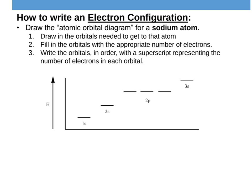As a quick review, if I draw an atomic orbital diagram for sodium — just Na — sodium has 11 electrons. Putting those in: 1, 2, 3, 4, 5, 6, 7, 8, 9, 10, 11. In other words, the electron configuration is 1s2, 2s2, 2p6, 3s1.